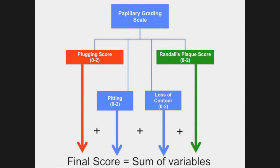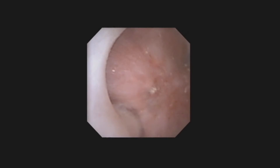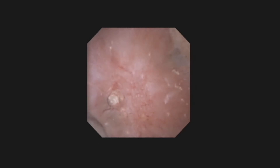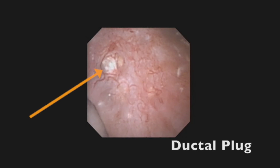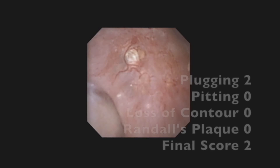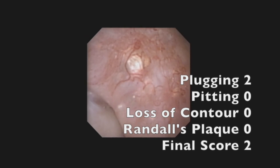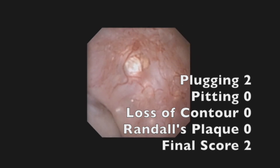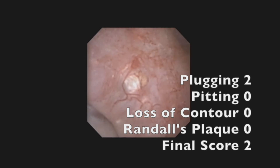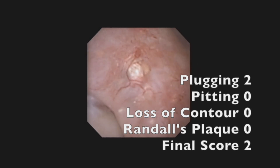At this point, the sum of the four measured variables is calculated, and a final papillary score is assigned for the individual papilla being studied. In this first reference example, greater than five yellow mineral deposits can be seen under the surface of the papilla — the largest of these is designated with an arrow. There is otherwise no pitting, normal contour, and minimal Randall's plaque. Final score is 2.